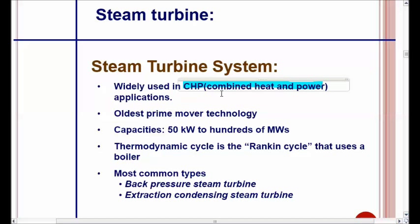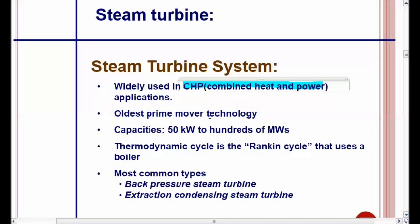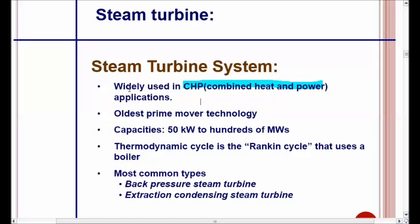Combined heat and power means the application is not only to get electrical output, but also to use the heat exhaust from the turbine for a useful process — for example, a paper and pulp industry or a sugar industry that uses the exhaust steam for their processes, making the efficiency much higher. This is the oldest prime mover technology known to humankind, ranging from 50 kilowatts to hundreds of megawatts. The thermodynamic cycle is based on the Rankine cycle, and the most common types are the back-pressure steam turbine and the extraction condensing steam turbine.